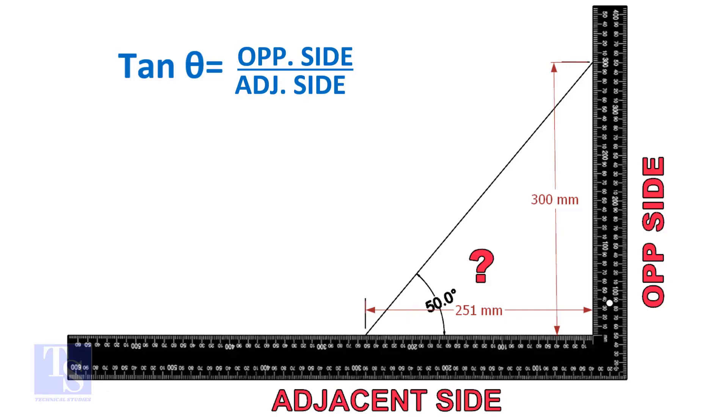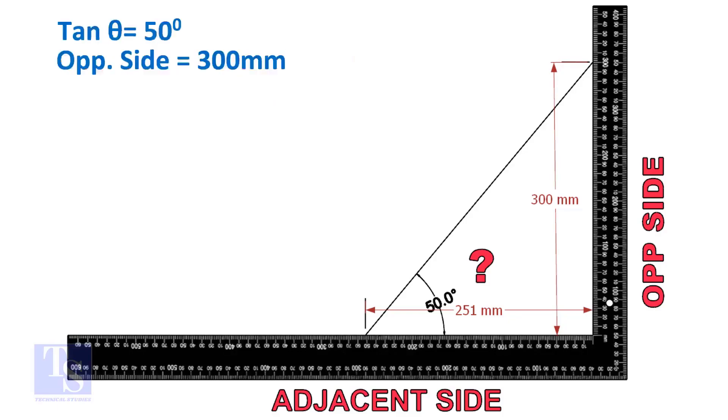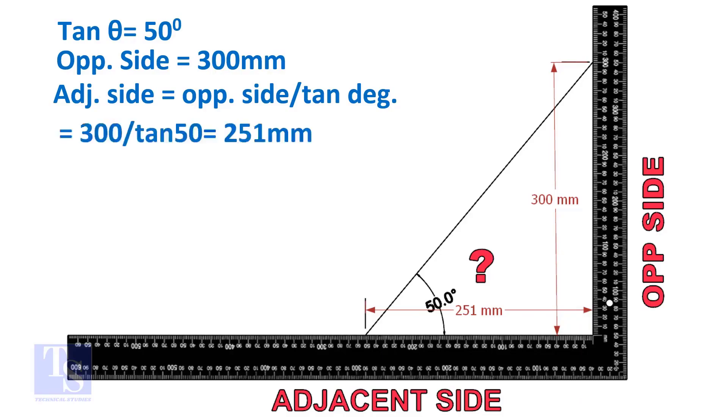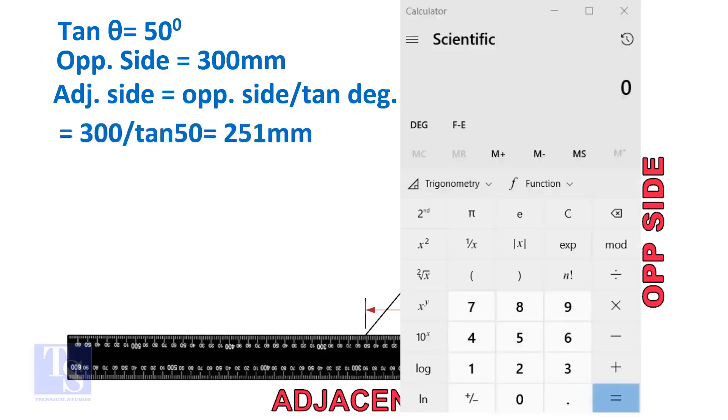Let us assume the opposite side is 300 millimeters. But you can take any suitable dimension as required. Adjacent side is equal to 300 divided by TAN 50 degree. Let us calculate.